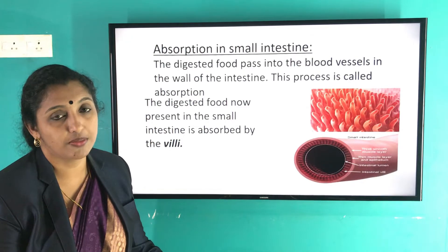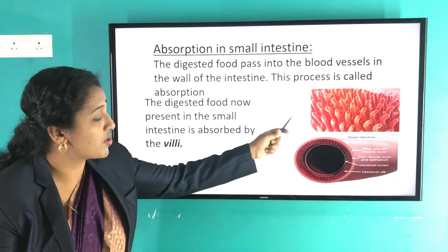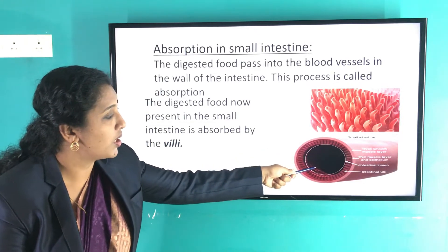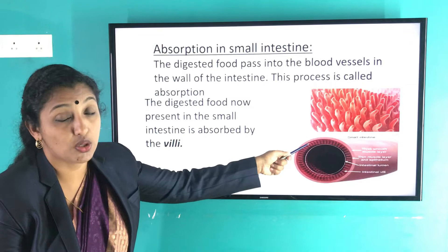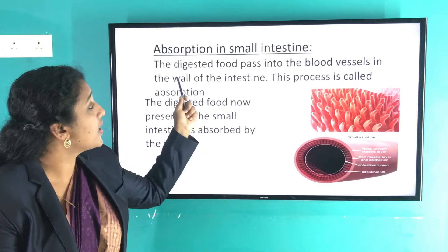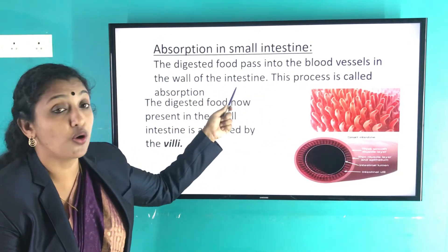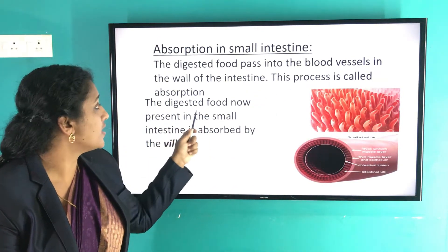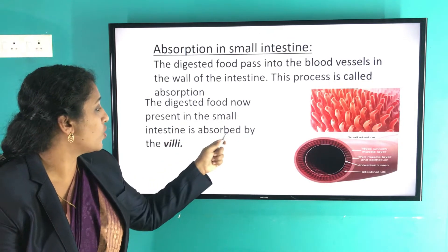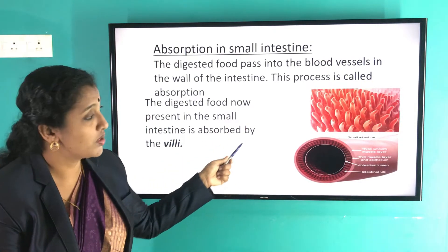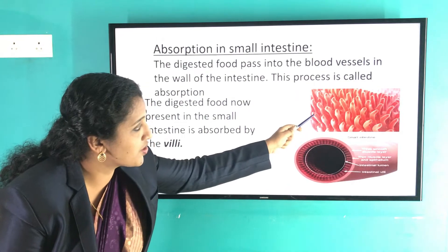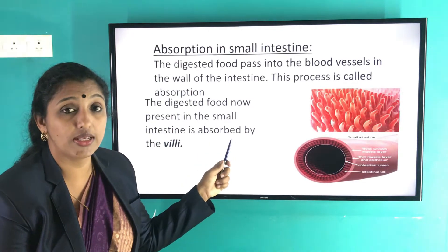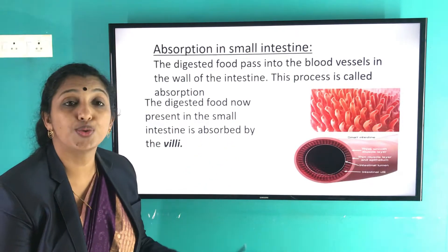All these nutrients are absorbed into the blood. The internal structure of the small intestine shows many finger-like projections called villi. Digested food passes through blood vessels in the wall of the intestine — this process is called absorption. The digested food present in the small intestine is absorbed by the villi, which increase the surface area.